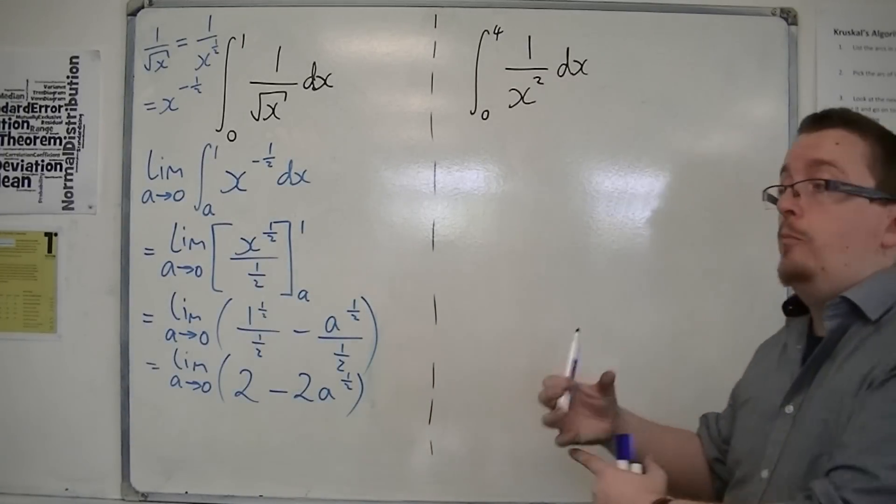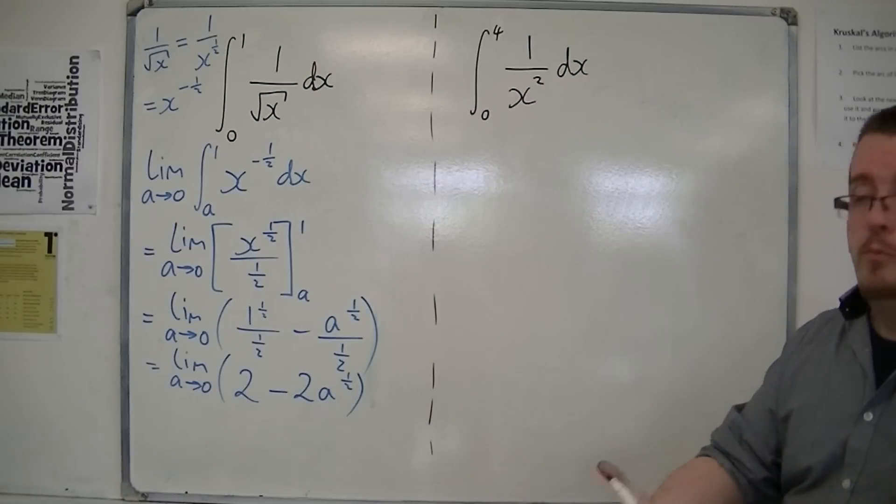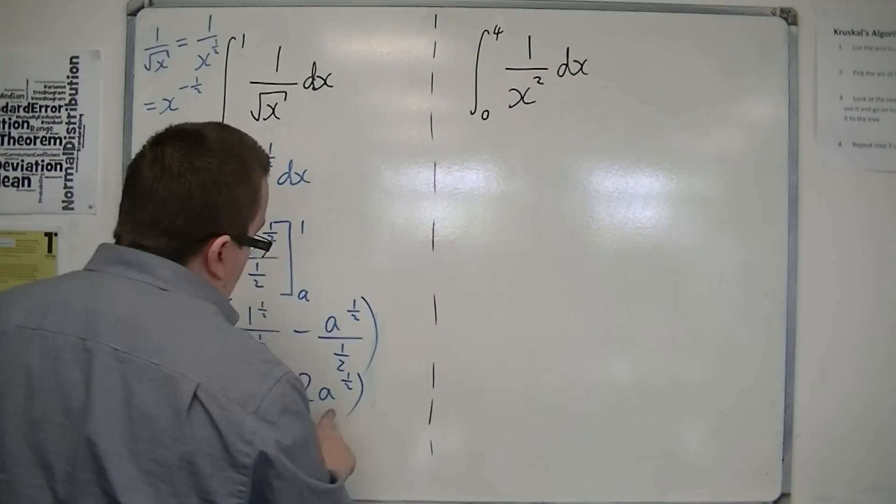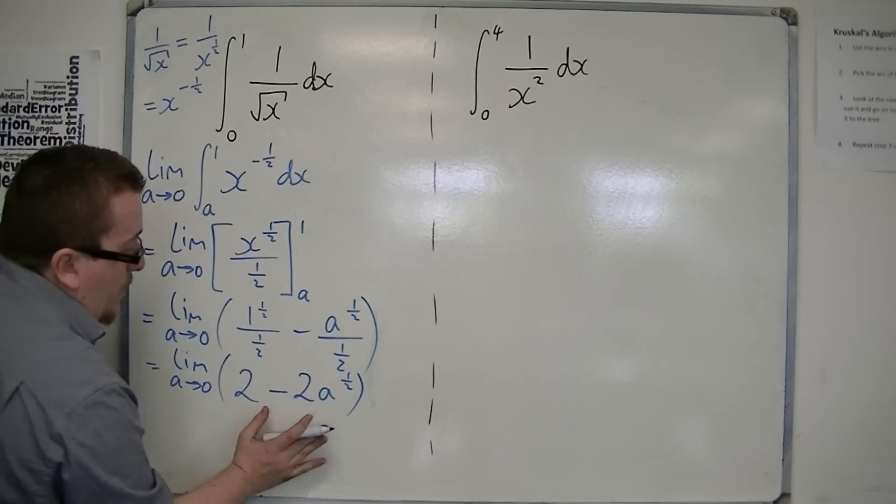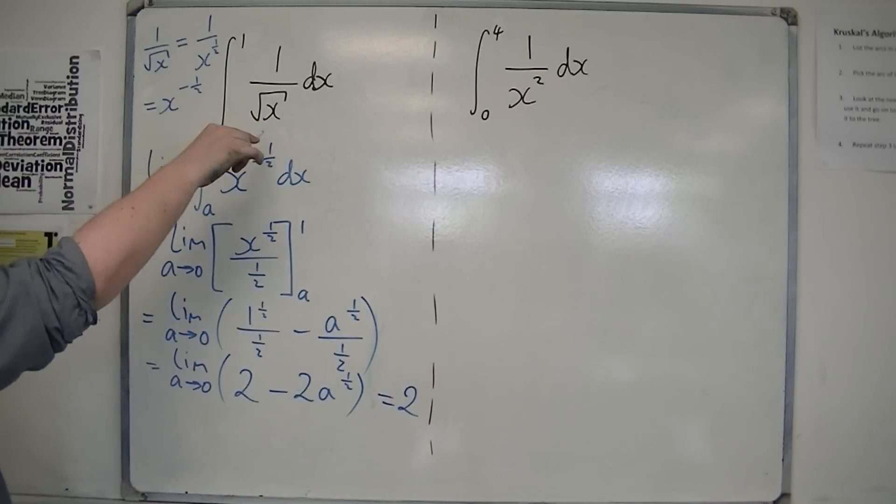So as a gets smaller and smaller, a to the half, the square root of a, gets smaller and smaller also. So this tends towards 0, and I'm just going to get left with that 2. So the integral between 0 and 1 of 1 over root x is just 2.